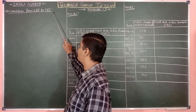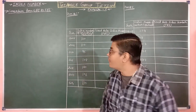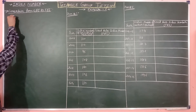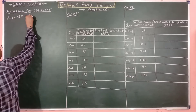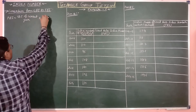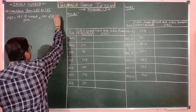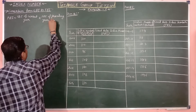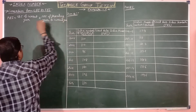That means chain base index number to fixed base index number — CBI to FBI conversion. The formula is: FBI equals CBI of current year, multiplied by FBI of preceding year, divided by 100.